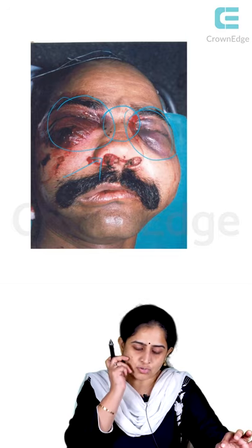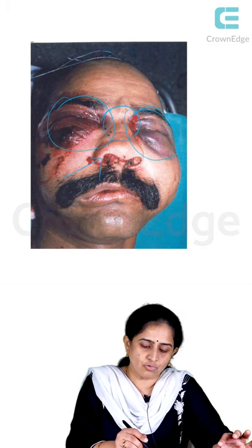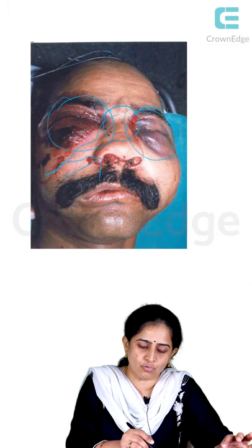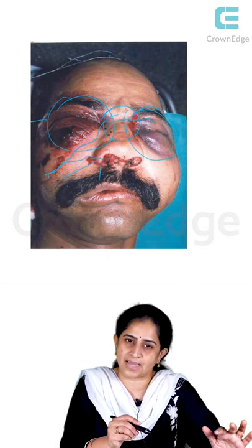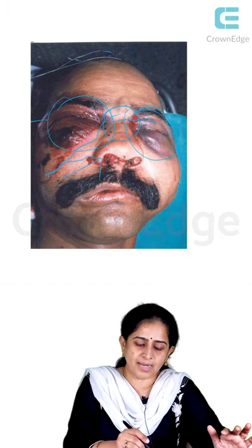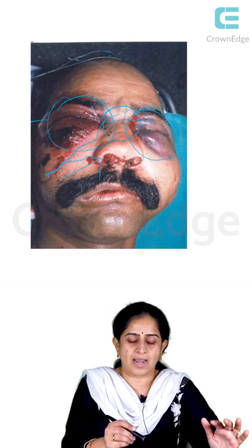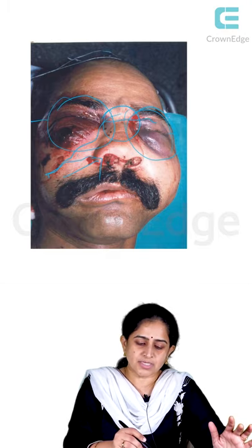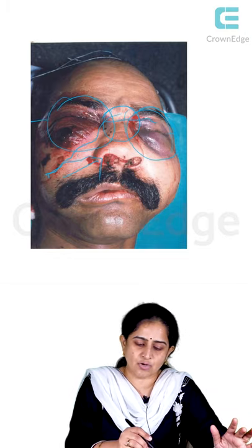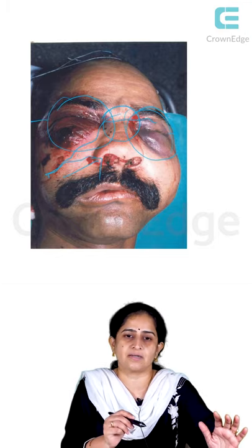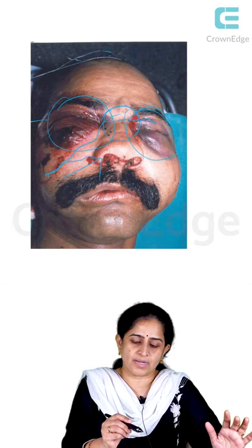Why does epistaxis occur even in a Le Fort 1 fracture? Because when you have a fracture line passing through the maxillary antrum — whether Le Fort 1, 2, or 3 — all of them will cause a disruption of the maxillary antrum. Once there is a disruption, blood collects inside the maxillary antrum and is drained through the middle meatus into the nose, coming out through the nasal cavity as bleeding. Epistaxis is thus a very important sign in middle third fractures — whether zygomatic fractures or Le Fort 1, 2, and 3 — wherever there is a disruption of the maxillary antrum or a fracture of the nasal bones.